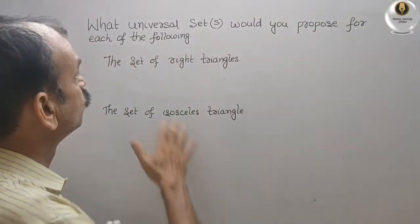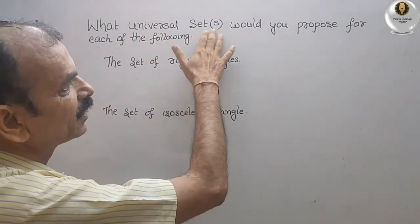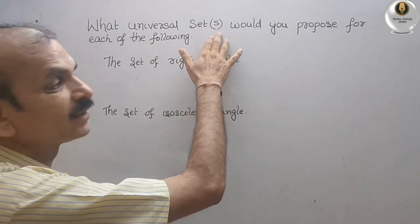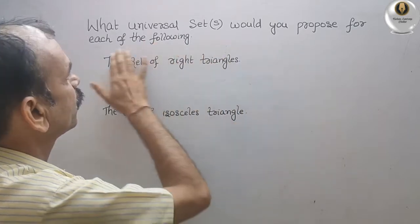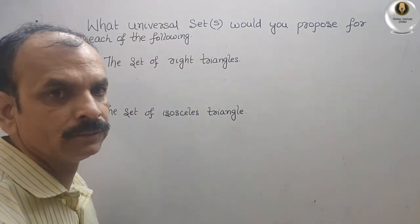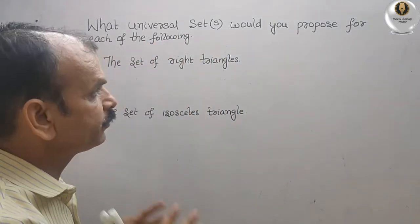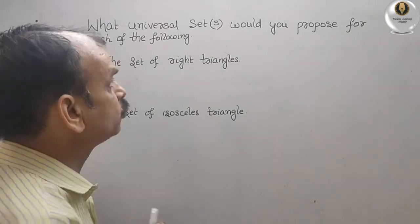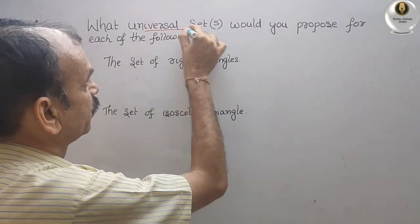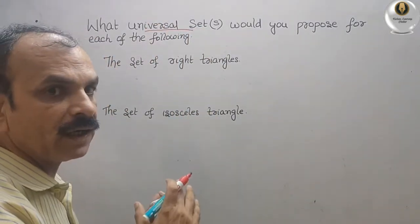Your question is what universal set or sets would you propose for each of the following? That means first we will understand what is the universal set. That means it will cover everything.